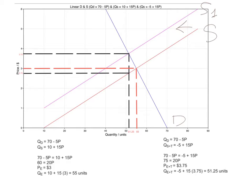The initial demand and supply functions are QD equals 70 minus 5P and QS equals 10 plus 15P. If you equate both equations together, it gives you an equilibrium price of three dollars and an equilibrium quantity of 55 units. This is the pre-tax equilibrium.